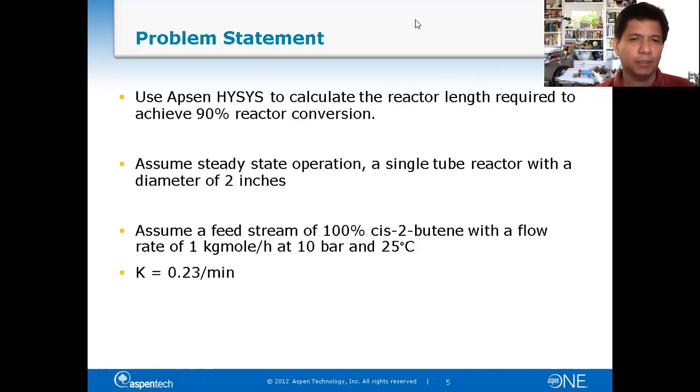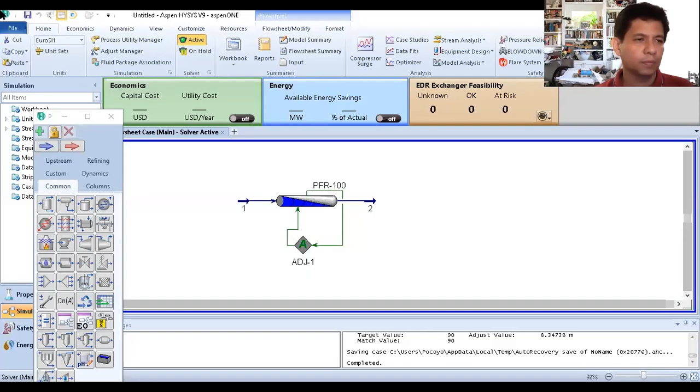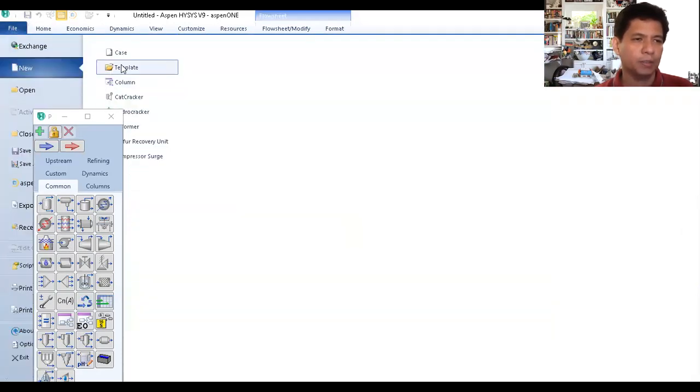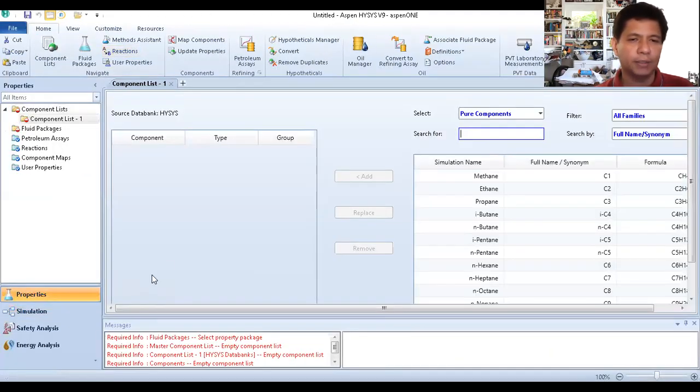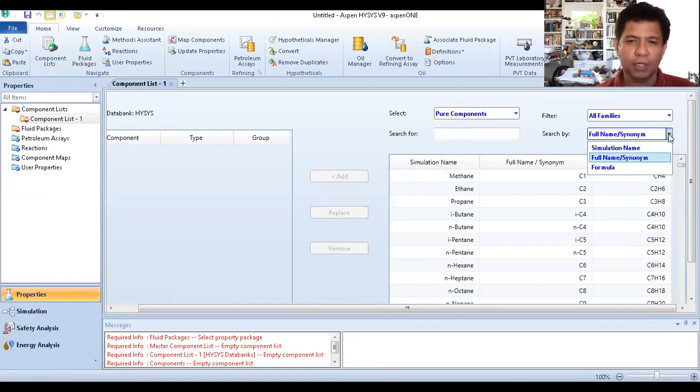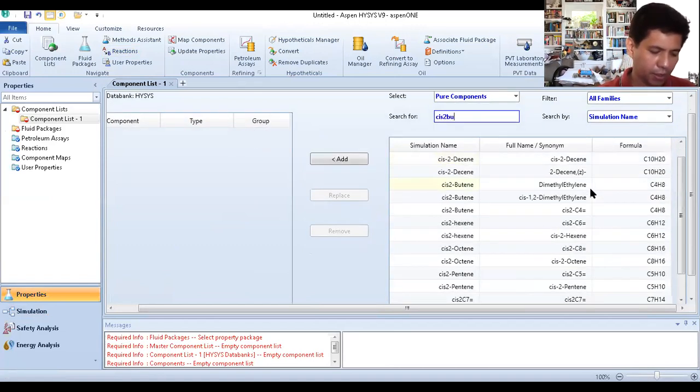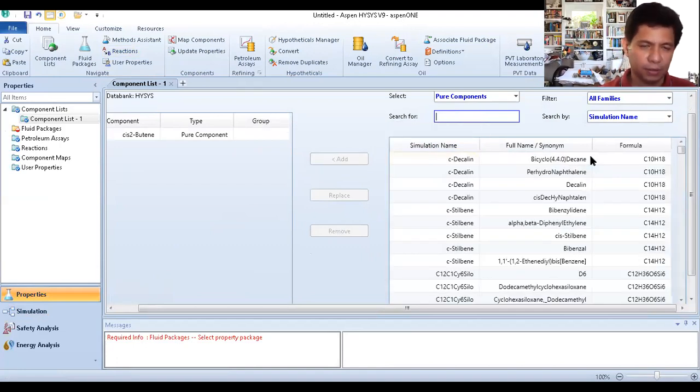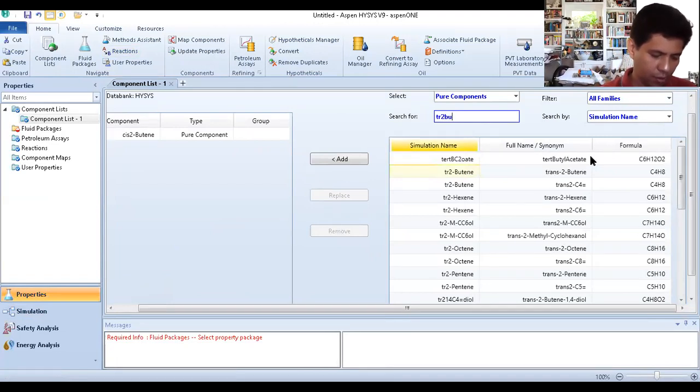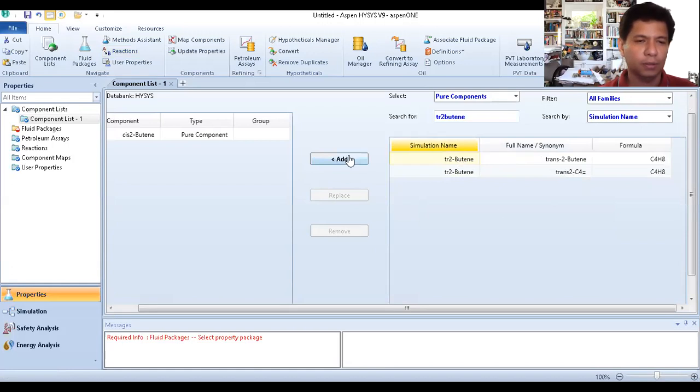Let me share my Aspen HYSYS. First step is to open a new case. Next, add the components. It's a bit challenging to find cis-2-butene and trans-2-butene. What I did was transfer to simulation name. I type cis-2-butene. There it is, it appears. Let's add this cis-2-butene. Then trans, I think trans is TR2 butene. Let's add it. These are your components.